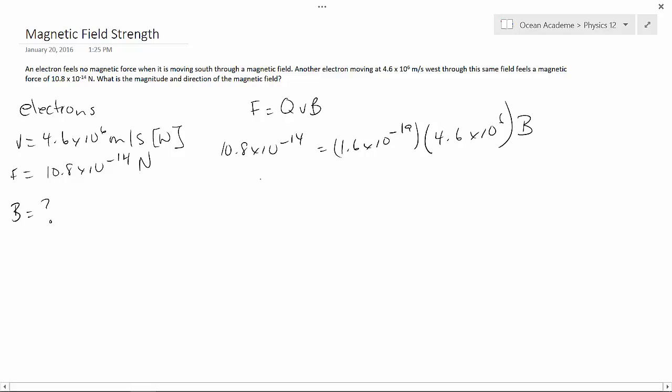Plugging that into our calculator, we determine that our magnetic field strength is equal to 1.147 tesla.